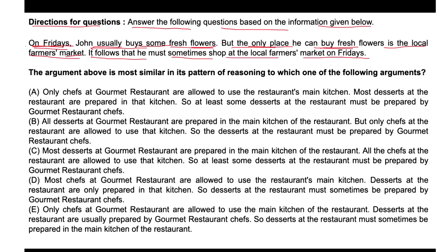When we do critical reasoning, we need to see what is the situation, what are the premise or premises, and what is the conclusion. Premises means stated reasoning or stated reason. The conclusion is nothing but a course of effect. Looking at the pattern: John usually buys some fresh flowers on Friday — that is premise one.